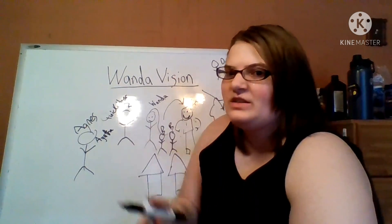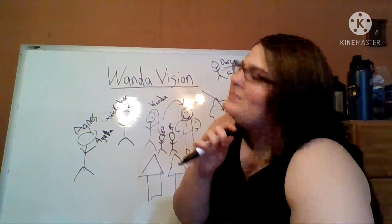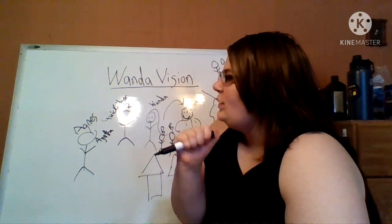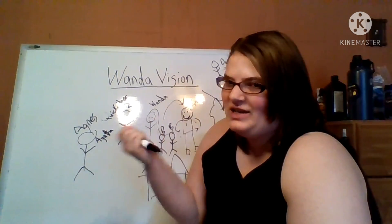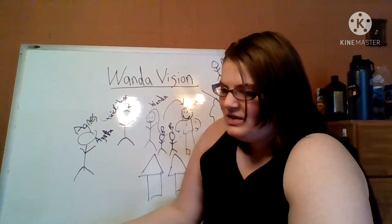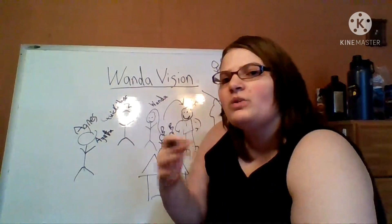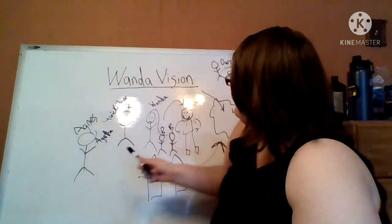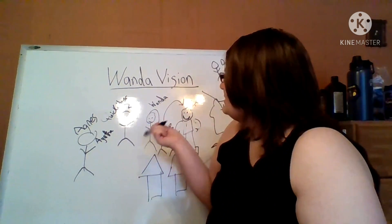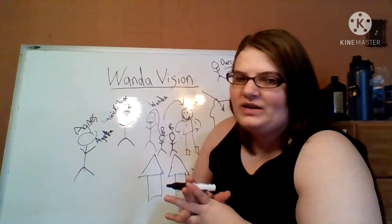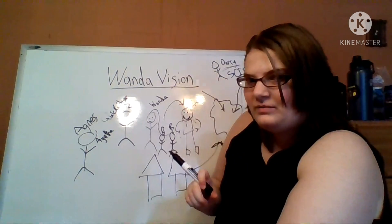Wanda doesn't realize? Maybe she doesn't know that she's enslaved people? So that's the thing I don't know, because I haven't seen it. But is Wanda aware that she is brainwashing and enslaving people? Or is this just her state of mind going wild because she hasn't properly dealt with her grief? And I think the answer to that will tell us a lot about how it works out with Darcy and Monica trying to save people.